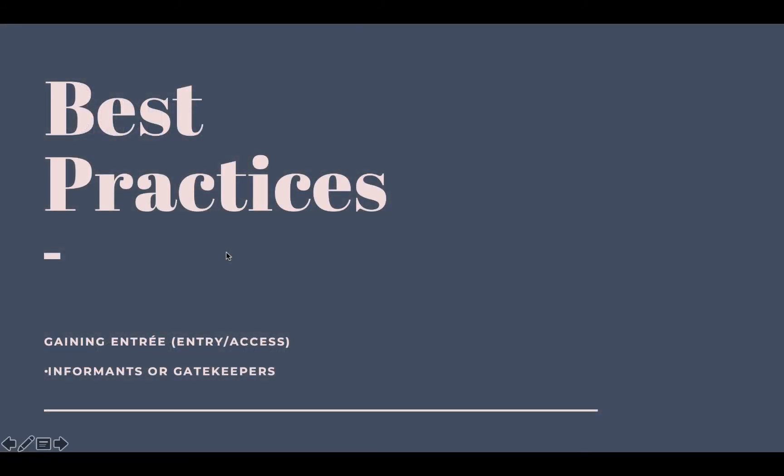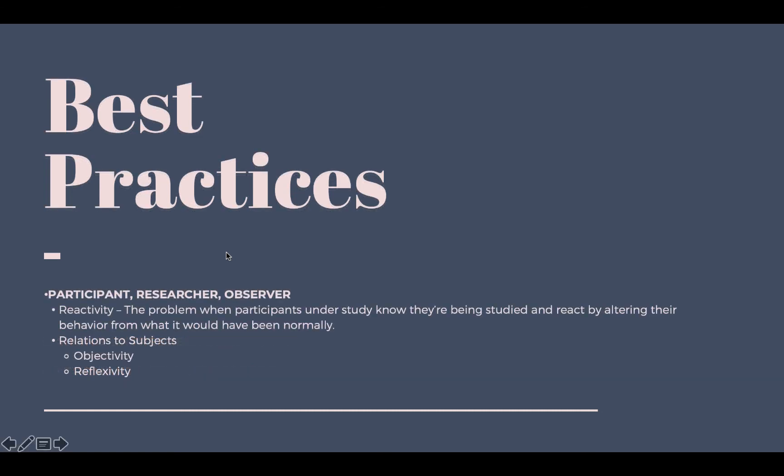Here are best practices for qualitative research. Gaining entree — or gaining access to a group — is important. You need to figure out how you're going to get access to a specific social group: are you going to become one of the people in the group, developing relationships with them? Developing relationships with gatekeepers — people who can give you access or vouch for you — is key. Once you gain access, you strengthen that relationship so gatekeepers can tell the group that you're trustworthy and want to learn about them, not harm them. You also need to decide: are you a full participant, a full observer, or somewhere in between?